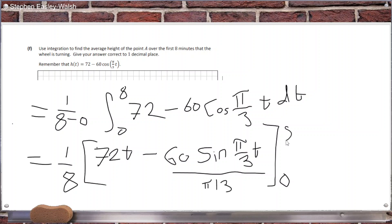8 first and 0 second. So 72 becomes 72t, and minus cos becomes minus sine, and you divide by the pi over 3. So like I said, when I did it,